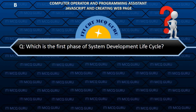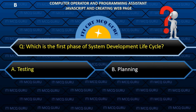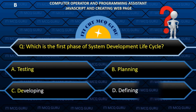Which is the first phase of the System Development Life Cycle? B. Planning.